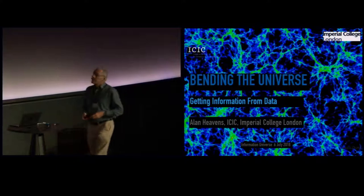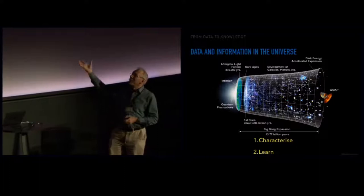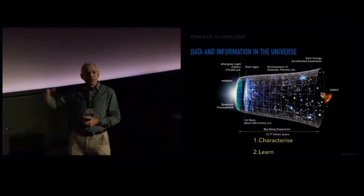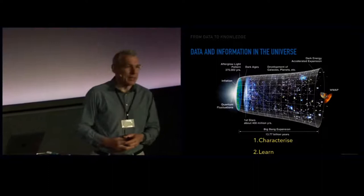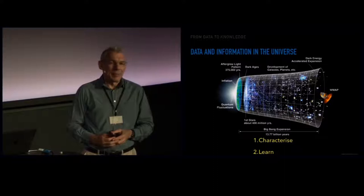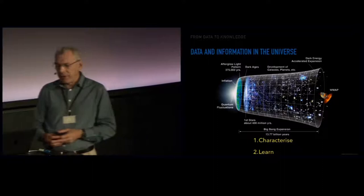The problem that we have is that we make lots of observations of data. This is the raw information or raw data that we have to work with. And the question is how do we turn that into knowledge? There are a couple of broad ways to do this. We can characterize the data in a way that requires relatively few assumptions. And we can also try to learn from it in the context of a model, which may be the Big Bang model or some other favorite theory. I'll talk about both of those in this talk.